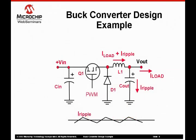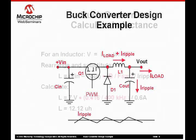Here is the schematic for the buck converter for which we will select component values. In this example, either a P-channel or an N-channel MOSFET may be used. The choice will be based on cost and complexity issues.